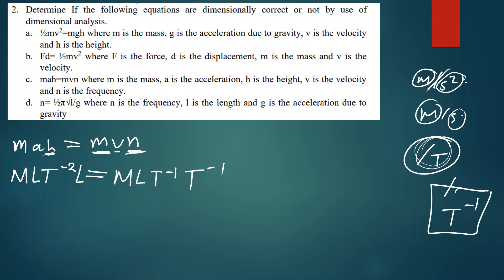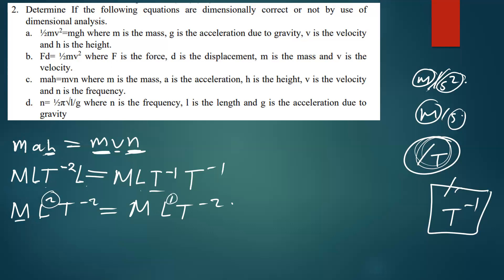Comparing both sides: the left side gives M times L times L²T⁻² = ML²T⁻². The right side gives M times L times T⁻¹ times T⁻¹ = MLT⁻². The power of L is different on each side, so this equation is not correct.